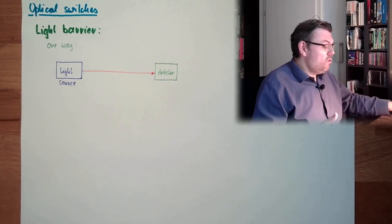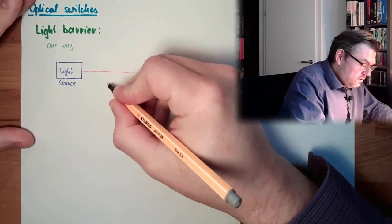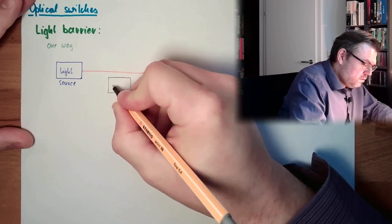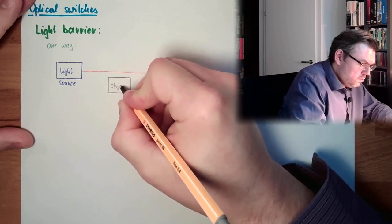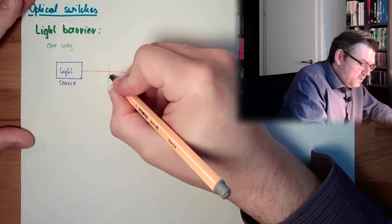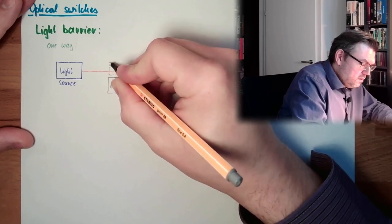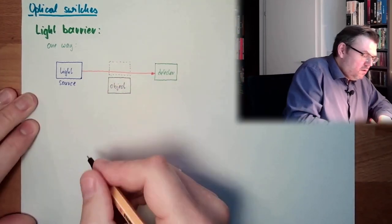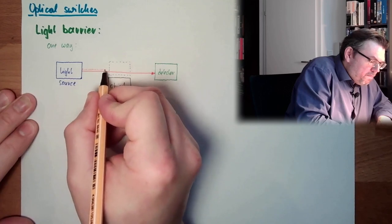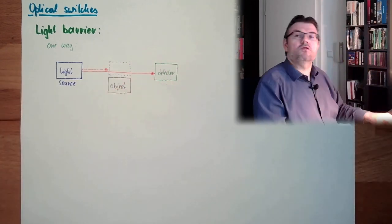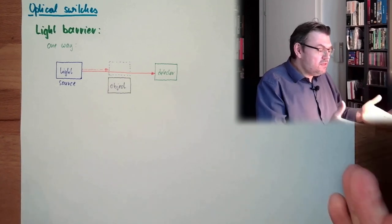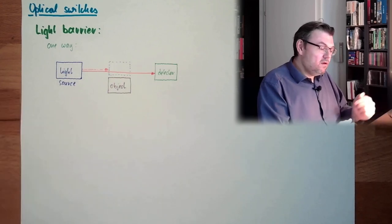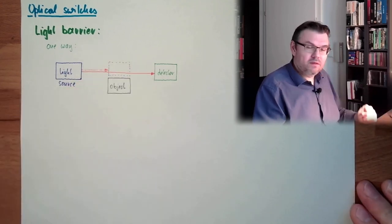And then if some object is in between, here we have some object. And if we put the object in here, the light is blocked. And the detector is not detecting any light. So this is a one way light barrier. The object is blocking the light and we detect it with the detector.